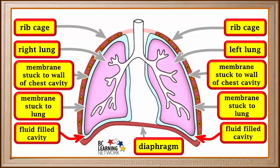Between these two membranes is a cavity filled with watery liquid. This layer of fluid provides lubrication so movements of the lungs don't irritate tissues. It also helps to stick the outside surface of the lung to the wall of the chest cavity.